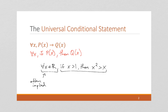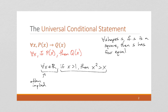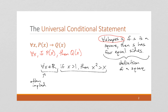Here's another example: for all shapes s, if s is a square, then s has four equally-length sides. This is the definition of a square. The domain is often implicit — if we're talking about squares, that means we're talking about shapes. But we can be explicit about it, and when we are, we see it's a universal statement. This universal conditional statement is everywhere in math; it's just often implied rather than written.